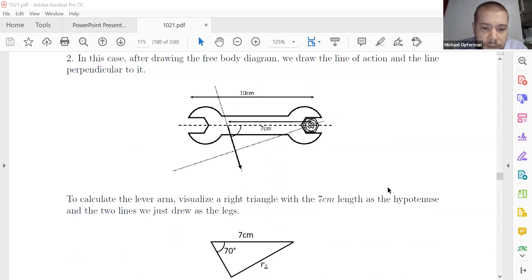So in the lever arm based method, remember step one is still draw the diagram, no problem. Step two, we draw these two lines. So one line goes through the force, that's this one, that's the line of action. And line number two is perpendicular to the force and passes through here, the axis of rotation.